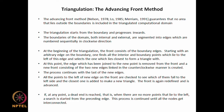At this point, the edge which has been joined to the new point is removed from the front, and a new front consisting of the two new edges linked in the counterclockwise manner is created. The process continues with the last of the new edges — all points to the left of the new edge on the front are checked to find which lies closest, and the closest one is again taken to make a new triangle.